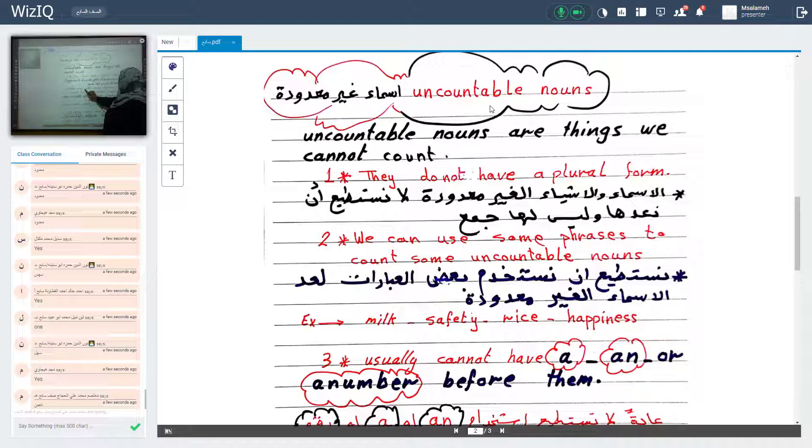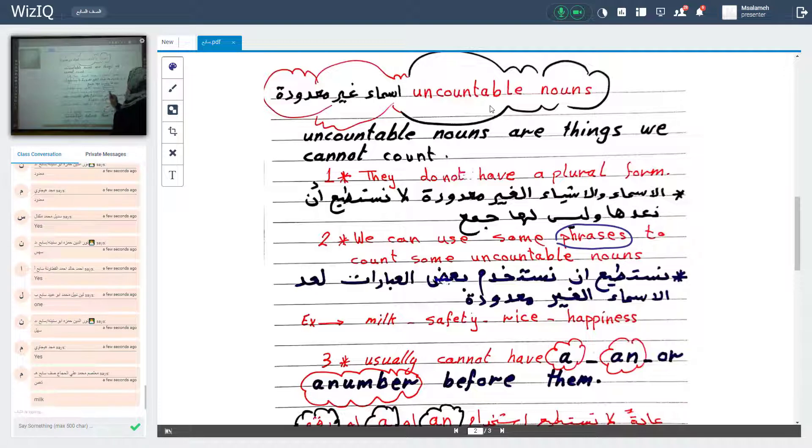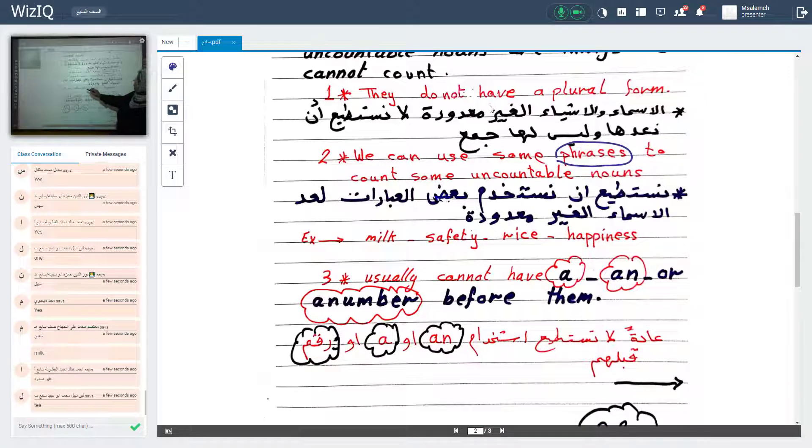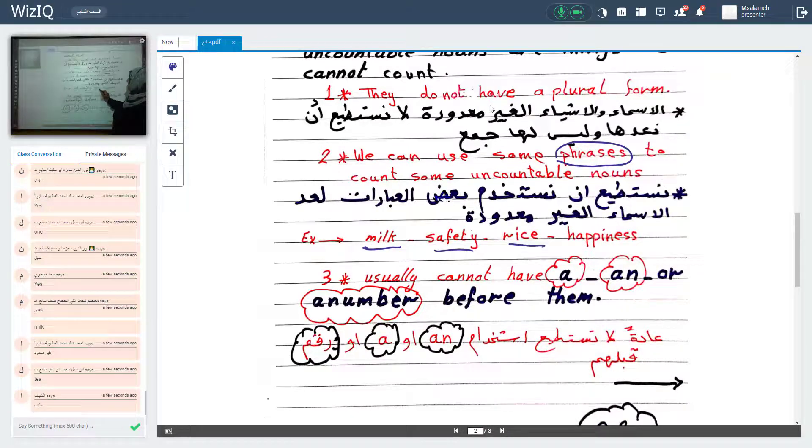We can use some phrases, عبارات, to count some uncountable nouns. نستطيع أن نستخدم بعض العبارات لعد الأسماء غير معدودة. Look at here. Like what? Here we have milk, rice, الأرز، happiness, السعادة. Is it clear?